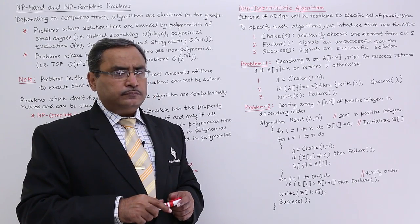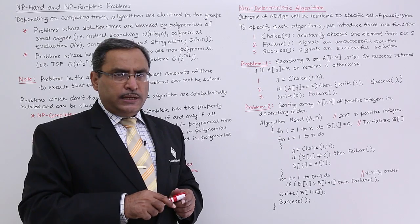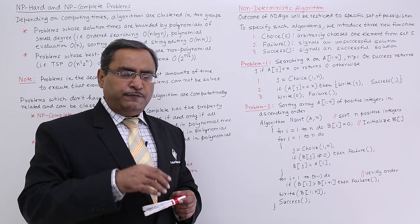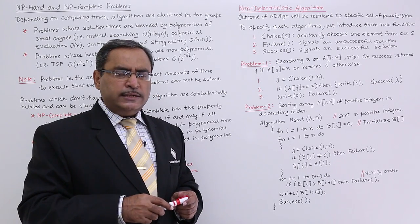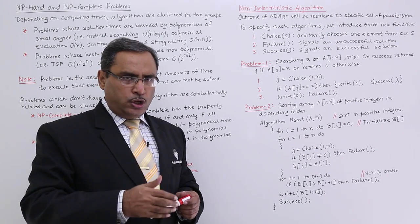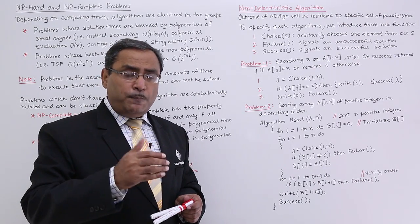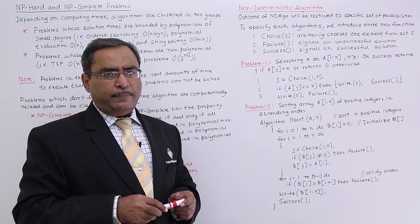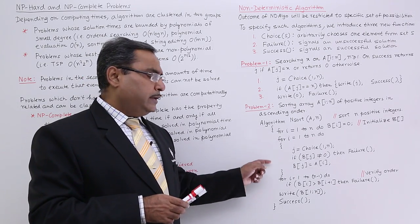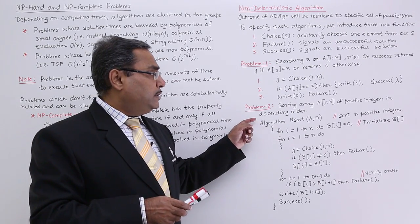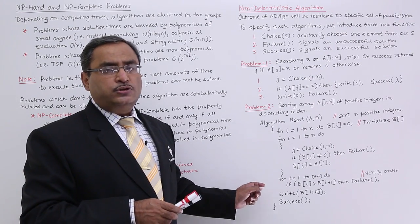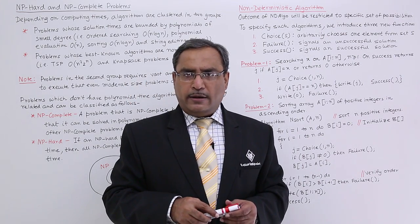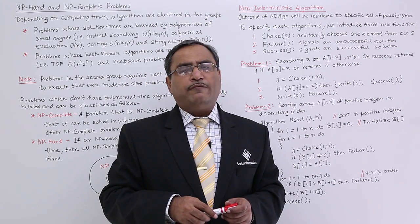In the case of NP-complete problems, those algorithms have non-polynomial time complexity. But if we apply a non-deterministic algorithm to solve the problem, their complexity might get reduced and it can become a polynomial time algorithm. That is why we have discussed non-deterministic algorithms — they can reduce the complexity of an algorithm.